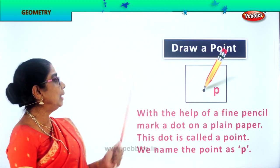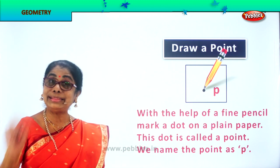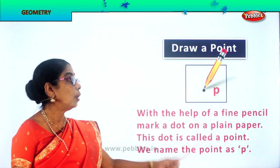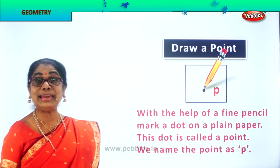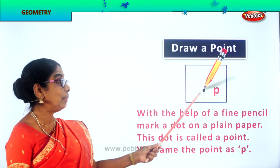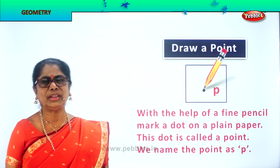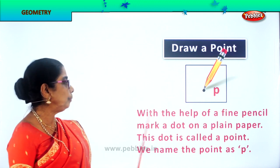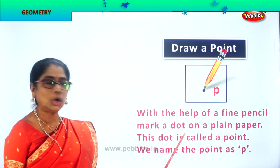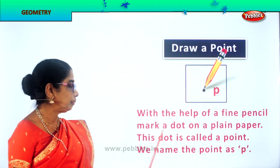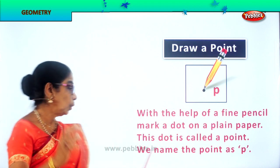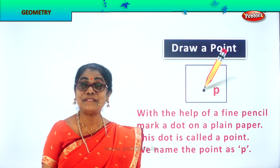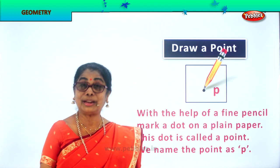You take a pencil, plain paper, put a dot with the pencil on the paper — that is called a dot. We name the dot. You have a name, so this pencil dot also needs to have a name. You can put any letter: P, A, D — anything. We name the point as P. With the help of a fine pencil, mark a dot on a plain paper. This dot is called a point. We name the point as P, so we call this point P. That's the first part of geometry — the dot, how to make a dot, what is a dot.